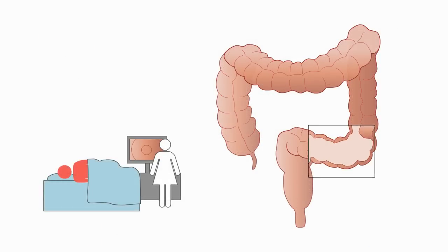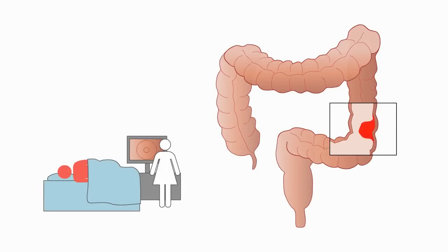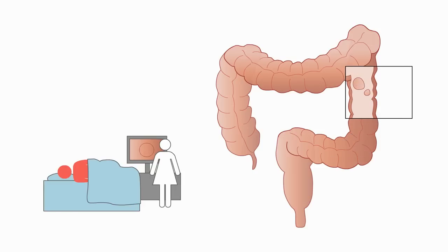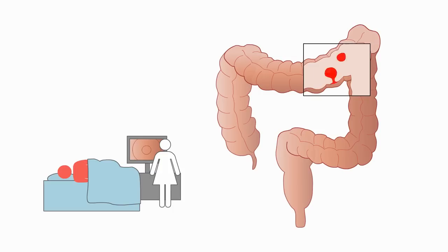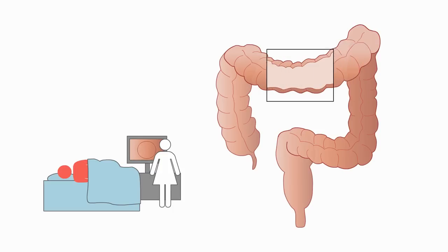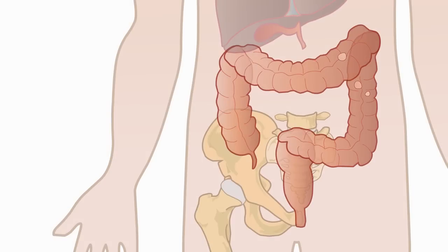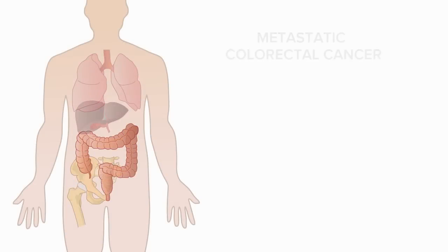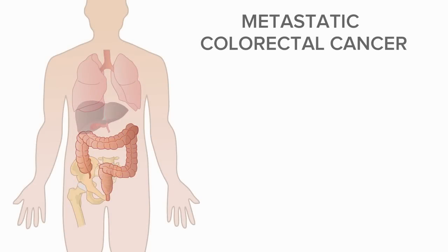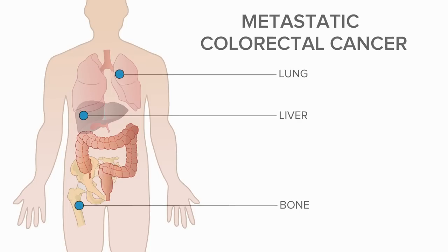When caught early through preventative screenings, polyps are removed, which can prevent the development of CRC. If they are not caught early, some polyps can become cancerous. Tumors can eventually grow through the colon wall and may spread into the surrounding tissue or to other parts of the body. When cancer has spread to distant parts of the body, it is called metastatic colorectal cancer. The most common sites of colorectal cancer metastases are the liver, lung, and bone.